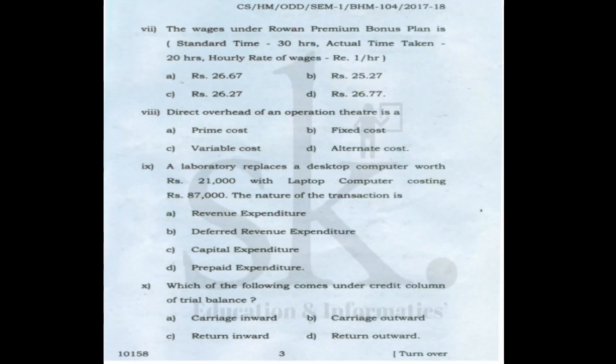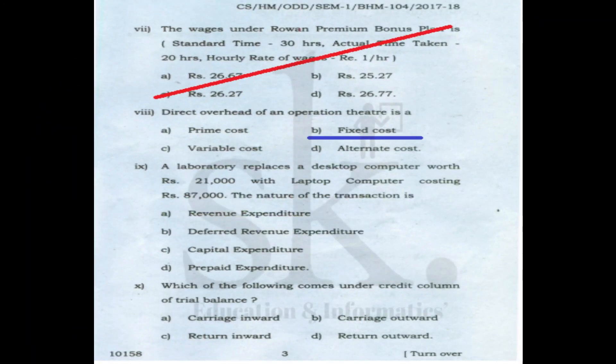Question number seven is from the costing chapter on labor, which is not currently in the syllabus, so we skip it. Question number eight: direct overhead of an operation theater is basically a fixed cost because direct overhead cost is fixed. The correct option is B.